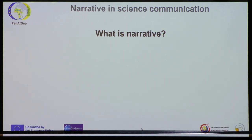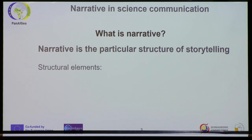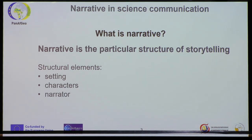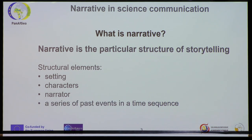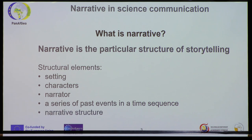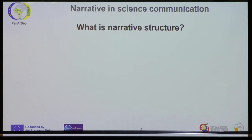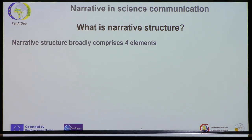So what is narrative? It's simply the particular structure of telling a story, and it comprises a series of elements which include the setting — the background — the characters, a narrator, a series of past events in a time sequence, and a narrative structure. Broadly, narrative structure consists of four elements.